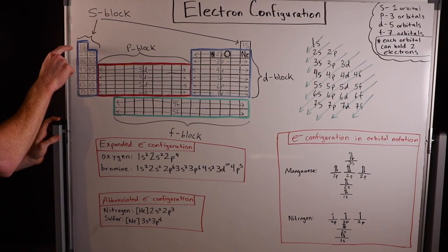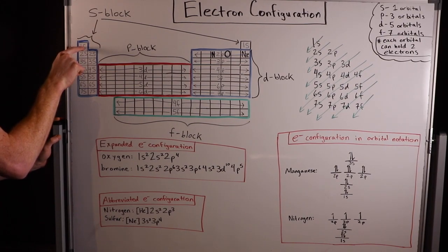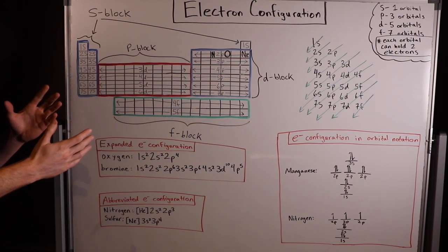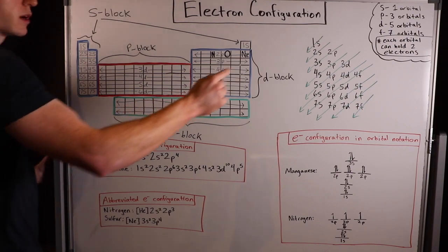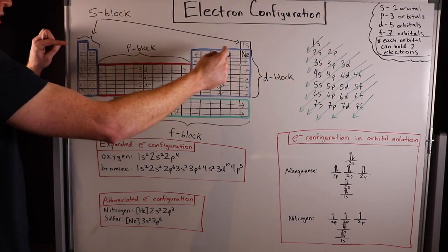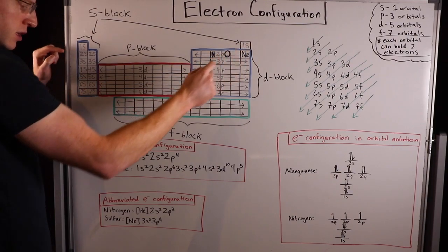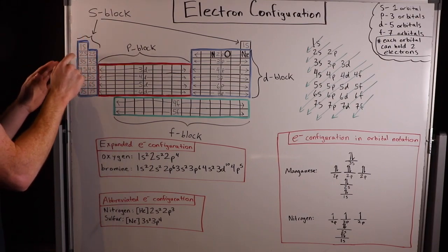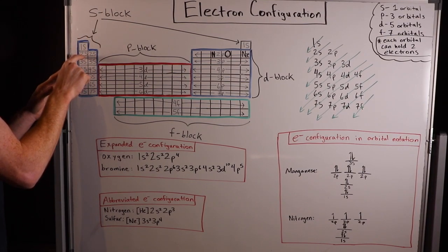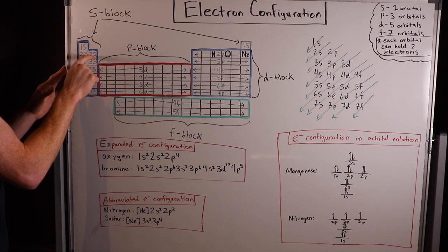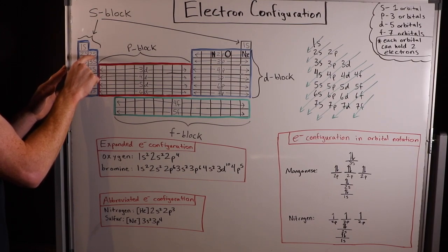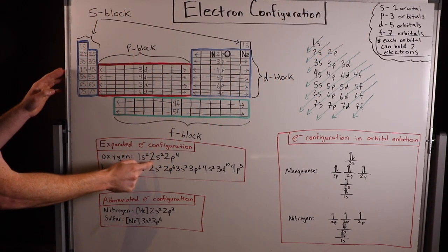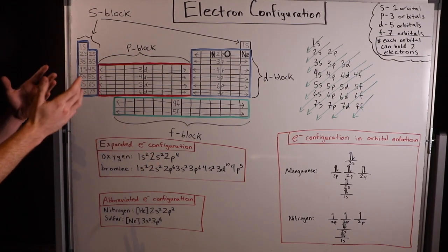We start at the top left, we have one electron in our 1s orbital. Then we go to the right, we have another electron in our 1s orbital. So now our s level is filled, because we know s has one orbital. We put two electrons in it, so now that's filled. So 1s2. Then we go down to the next row. Now we put one electron in our 2s orbital, another electron in our 2s orbital. So 2s2. The 2s orbital is filled with two electrons.